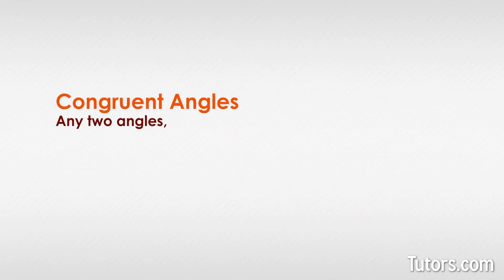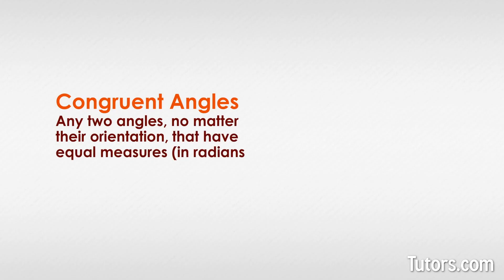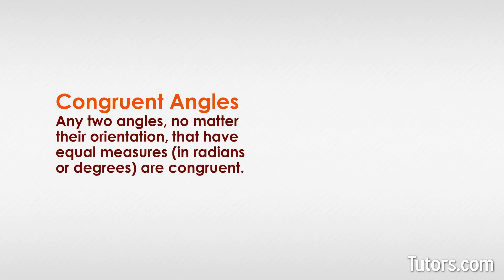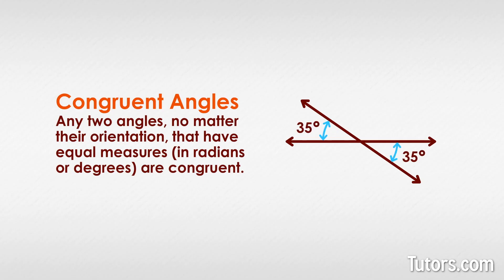Any two angles, no matter their orientation, that have equal measures in radians or degrees are congruent. They show the same openness between the two rays, line segments, or lines that form them. So these two 35-degree angles are congruent, even if they are not identically presented and are formed with different constructions.